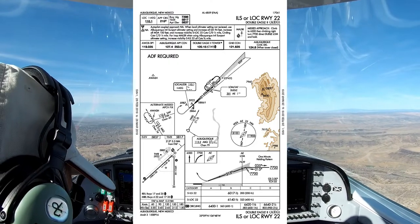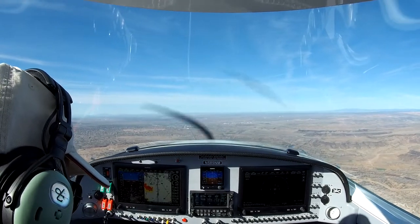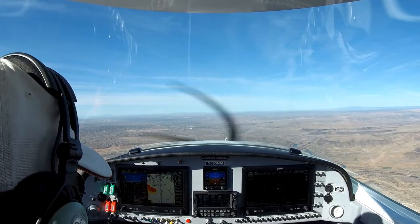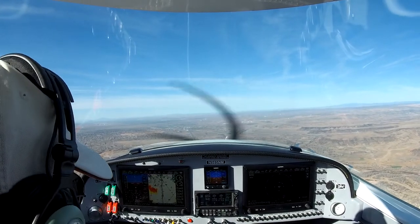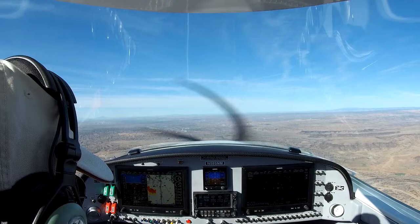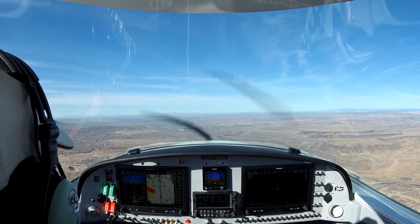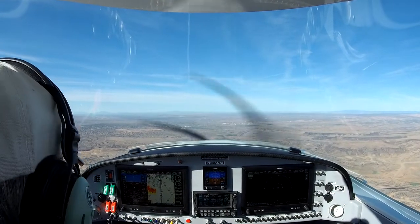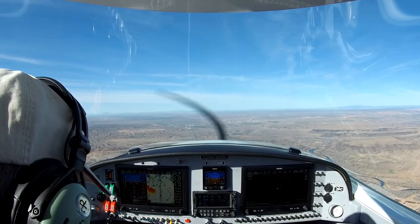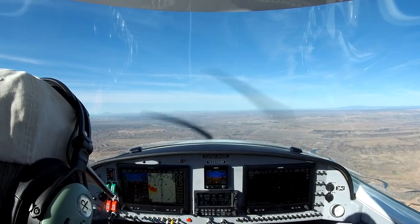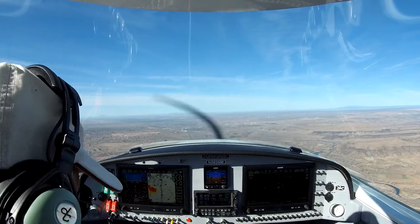Albuquerque approach, Foxtrot 585 November Mike. 585 November Mike, long approach — about 17 miles north. We'd like to fly direct Dudley to the ILS 22 at Double Eagle. We've got Gulf weather, with a missed approach down to Belinda near the ARDAP.